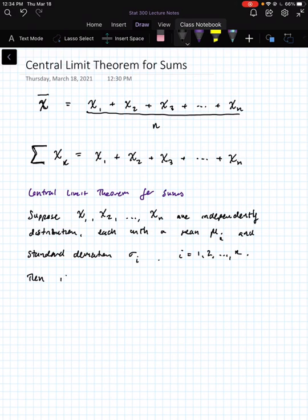Then, if n is sufficiently large, such as greater than or equal to 30, then y being the sum of these random variables has a normal distribution.